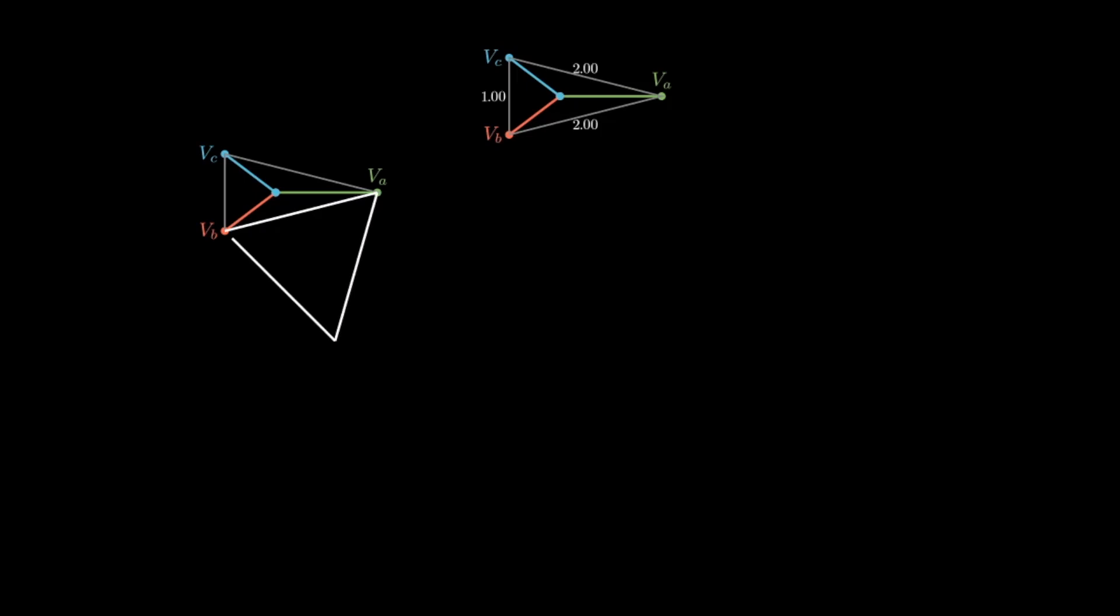First, erect external equilateral triangles off the sides of the phasor triangle, and then connect the center of these three new triangles. This is a construction known as a Napoleon triangle, specifically the outer Napoleon triangle, and it has a special property that it is always equilateral, meaning that all three of its sides are always the same length. Rotating this Napoleon triangle 180 degrees results in the triangle for V1, and the three V1 phasors can be recovered.